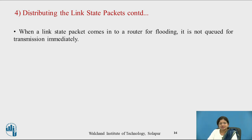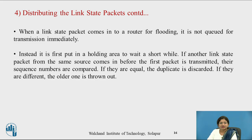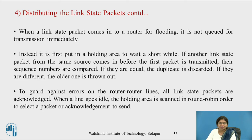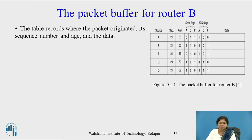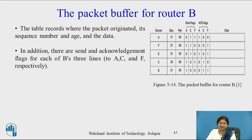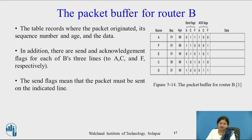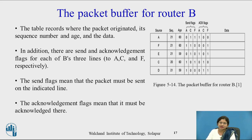When a link state packet comes into the router for flooding, it is not queued for transmission immediately. Instead, it is placed in a holding area to wait a short while. If another link state packet from the same source arrives before the first is transmitted, the sequence numbers are compared. If equal, the duplicate is discarded; if different, the older one is thrown out. To guard against errors, acknowledgements are sent. The packet buffer for router B records the packet's origin, sequence number, age, and data, along with send and acknowledgement flags for each of B's three lines.